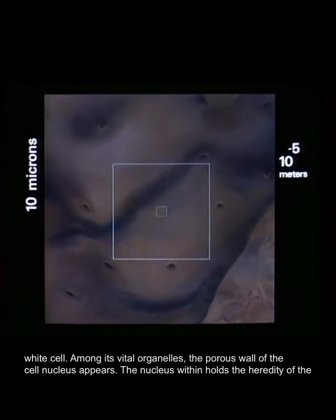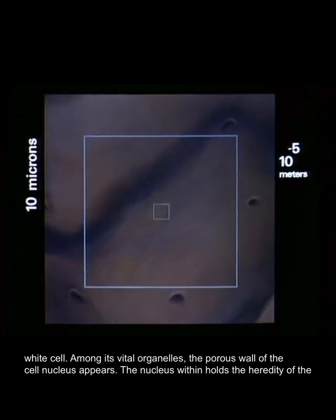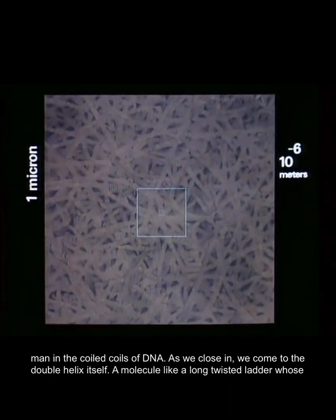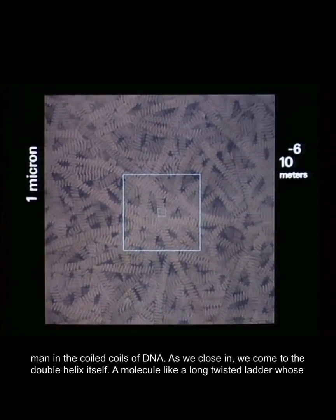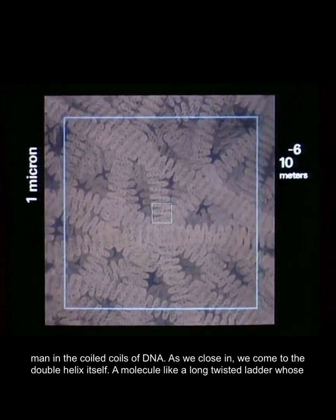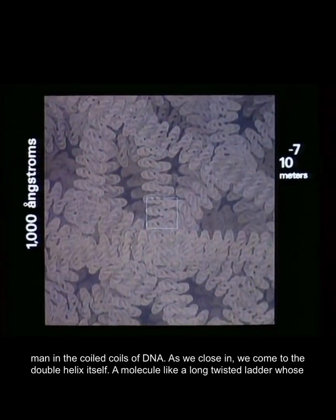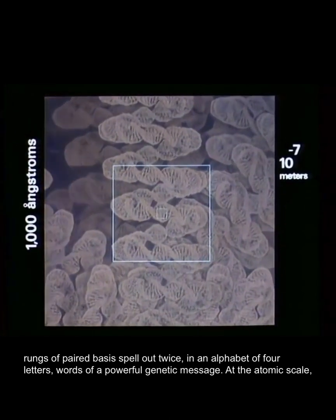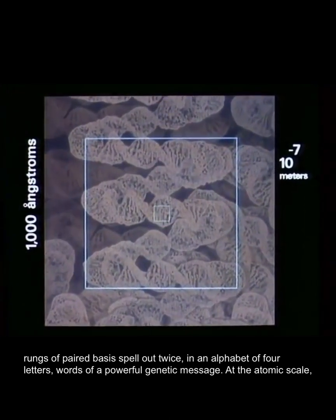The nucleus within holds the heredity of the man in the coiled coils of DNA. As we close in, we come to the double helix itself, a molecule like a long twisted ladder whose rungs of paired bases spell out twice in an alphabet of four letters words of a powerful genetic message.